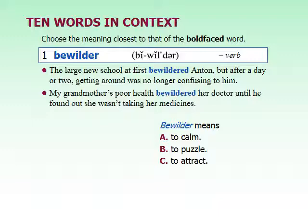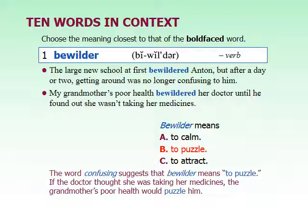Our first word is bewilder. The large new school at first bewildered Anton, but after a day or two getting around was no longer confusing to him. My grandmother's poor health bewildered her doctor until he found out she wasn't taking her medicines. Bewilder means to puzzle — really, to confuse someone in the sense that you don't understand the reason for something.